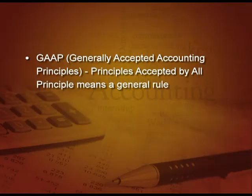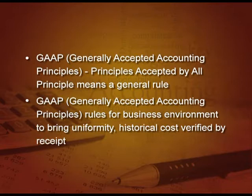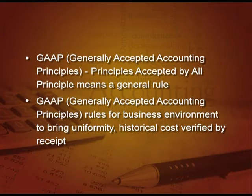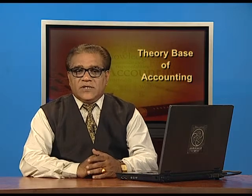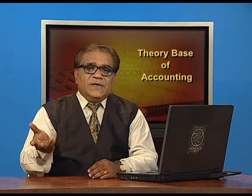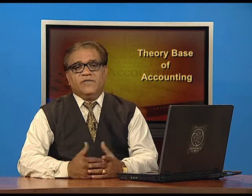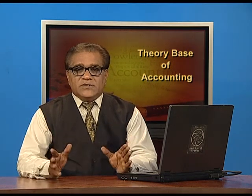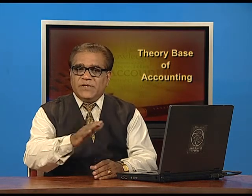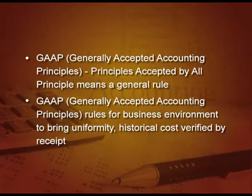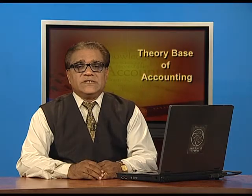A principle means a general rule which is accepted by everybody. GAAP — that is Generally Accepted Accounting Principles — are rules for the business environment made to bring uniformity in the accounts for everybody. For example, historical cost is verified by the receipt you take, so this brings objectivity in the accounts. Market price can be different for different people and different markets, so that is not verifiable. These principles are evolved over a long period of time, based on past experience, customs and usage — customs meaning traditions.